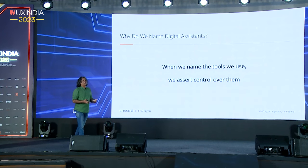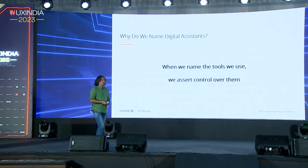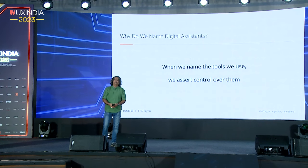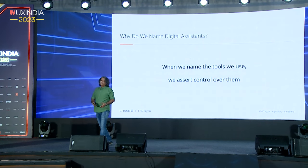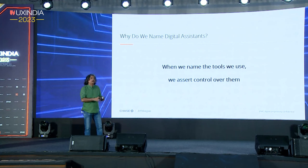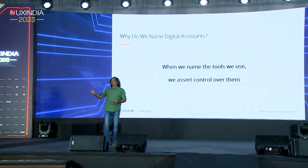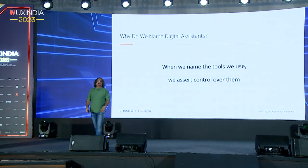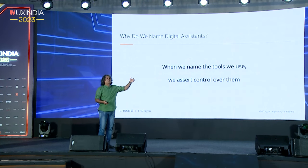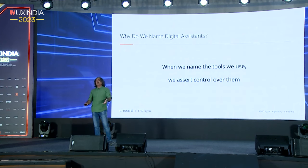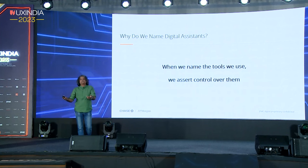People like to name their possessions — their cars, mobile phones, knick-knacks. As humans, we like to assert control over our tools by naming them. When you say 'Hey Google, do it for me,' you are putting that control on Google and getting a job done, which gives you pleasure. And when the job is done, it gives you additional pleasure.